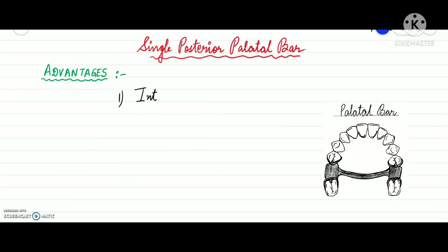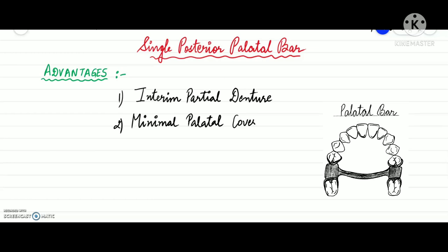Advantages of the single posterior palatal bar: it can be used as an interim partial denture — a removable prosthesis used for a short period to temporarily restore the patient's dentition until a final prosthesis is delivered. Another advantage is minimal palatal coverage, meaning the palatal area covered by the bar is minimal.